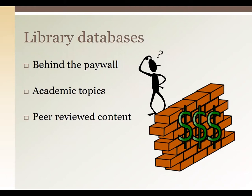Another important difference is that library databases are aimed at academic content. So if you're searching for sharks, you're not going to find a video for Baby Shark — you're going to find journal articles about shark behavior or biology. Another reason the information in library databases is different from Wikipedia is that a lot of it is peer-reviewed. When a journal publishes an article, other professionals in that field review the content first to make sure it lives up to the standards of that field.